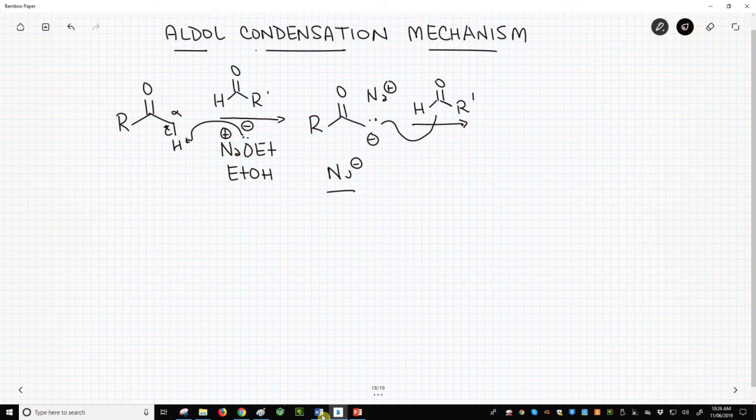It finds the aldehyde, which is already floating in the reaction. The enolate attacks the aldehyde and forms our tetrahedral intermediate.